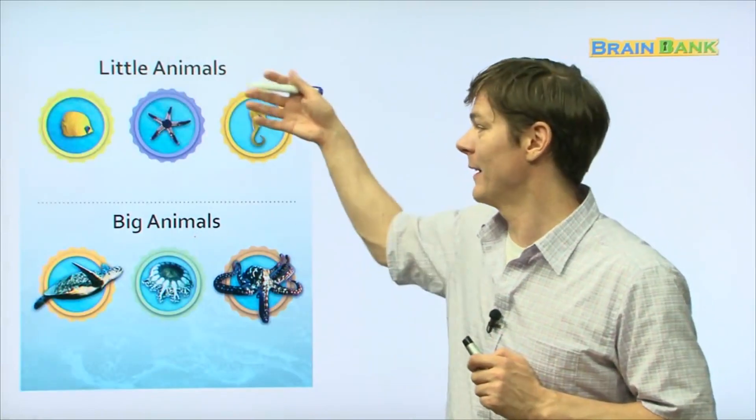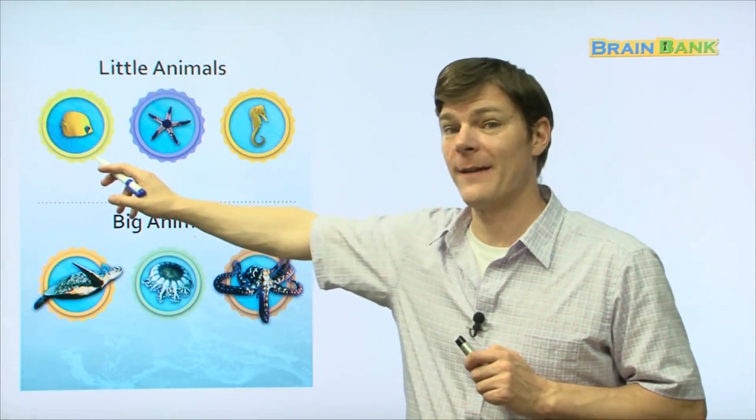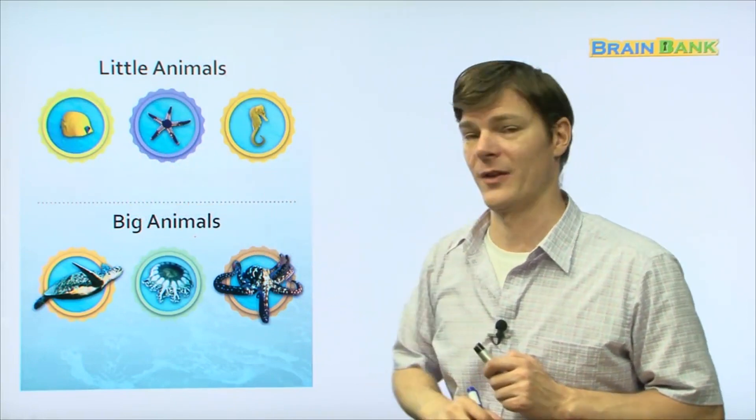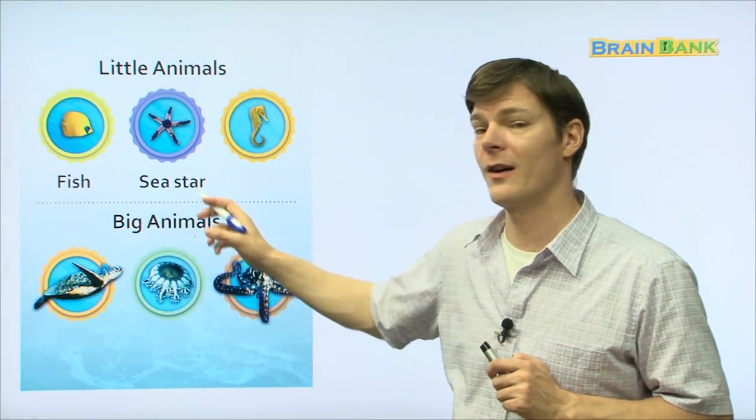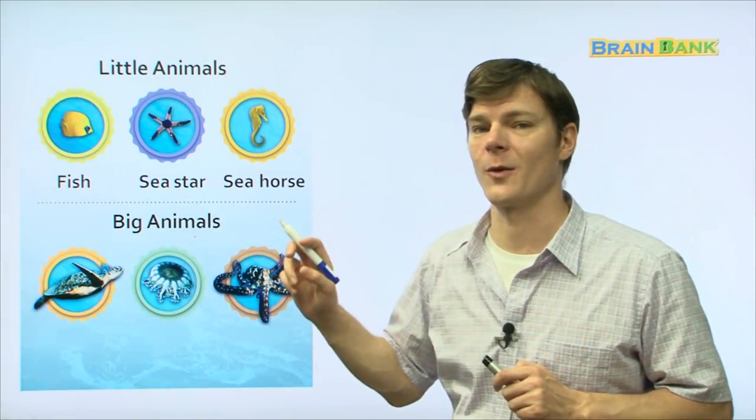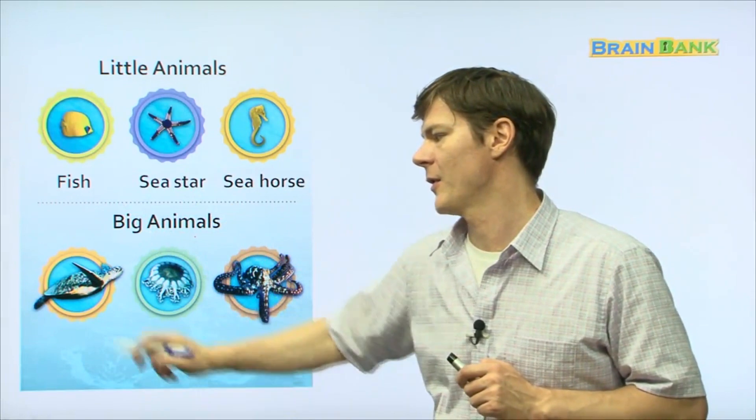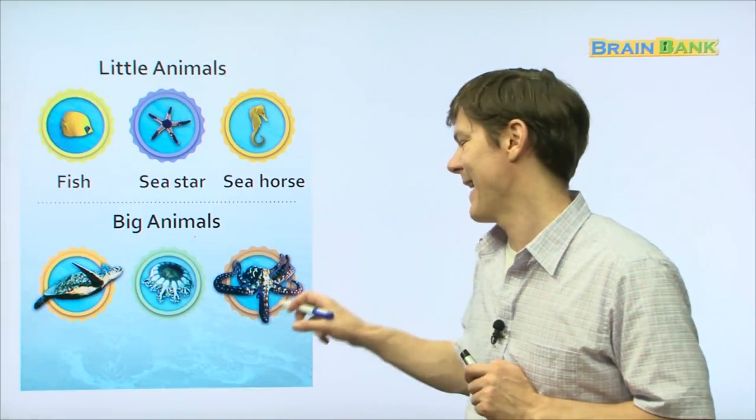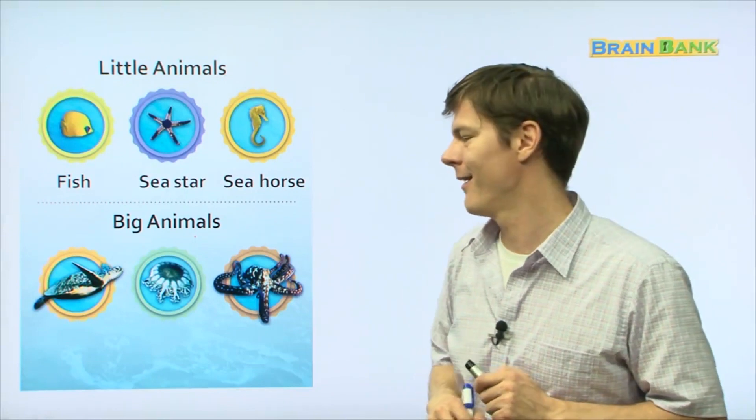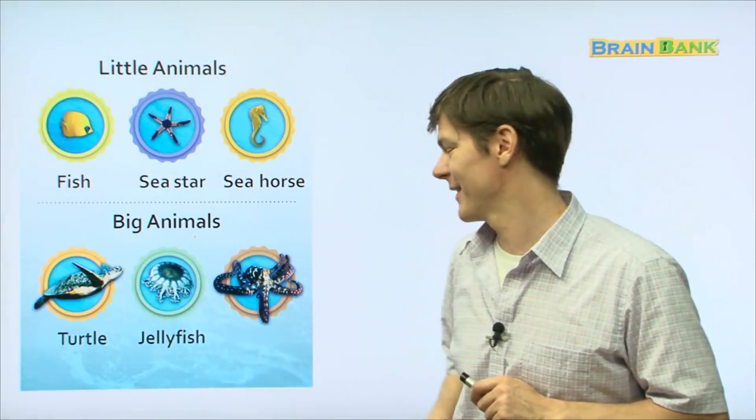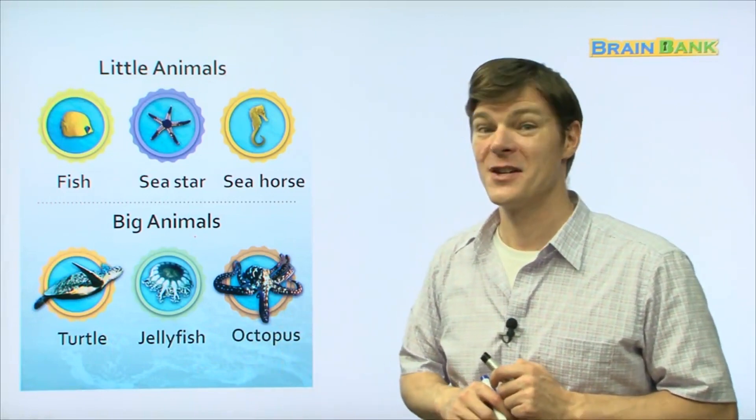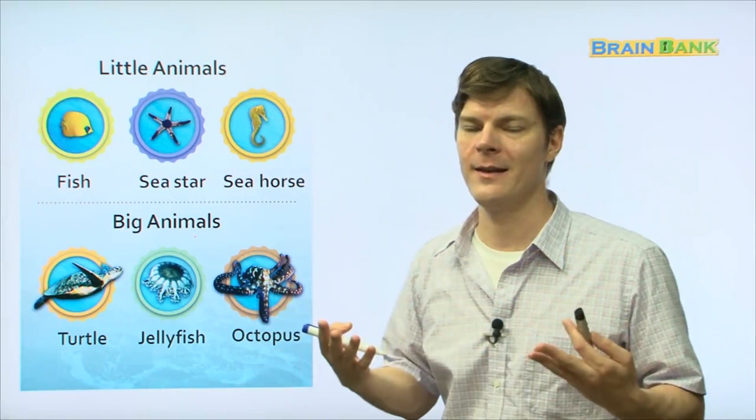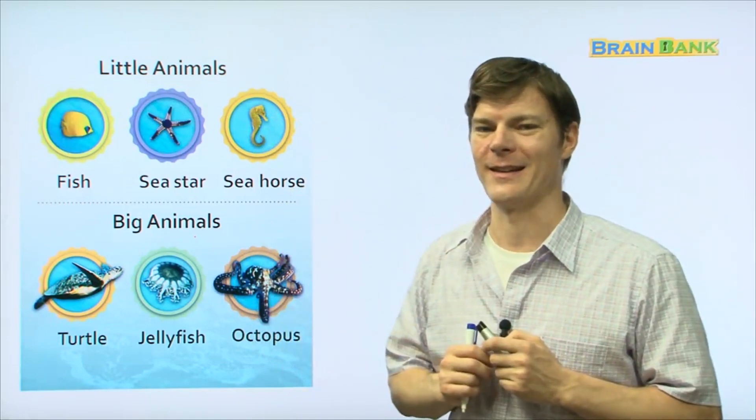Now here are some little animals and some big animals. Here we have the butterfly fish, the sea star or starfish, and the seahorse. And then down here we have some big animals: the sea turtle, the jellyfish, and the big octopus. So I hope you've learned a lot about the different types of little animals and big animals that live in the big blue sea. Thank you and see you later, bye bye.